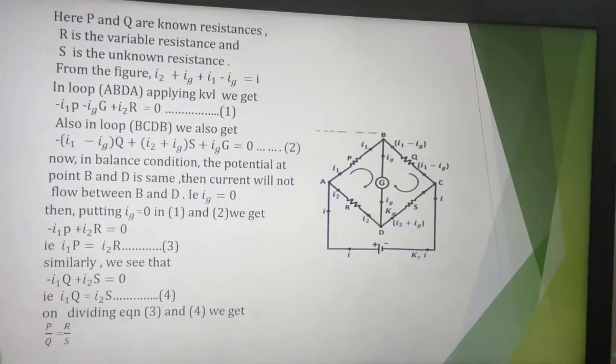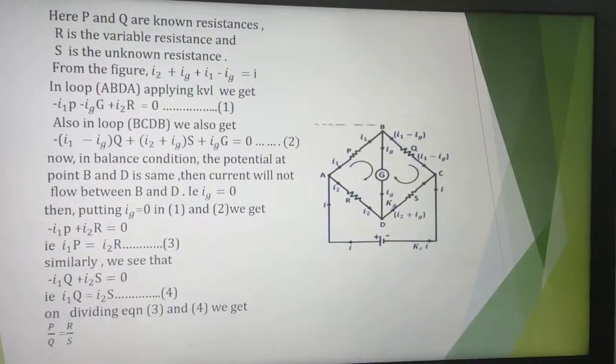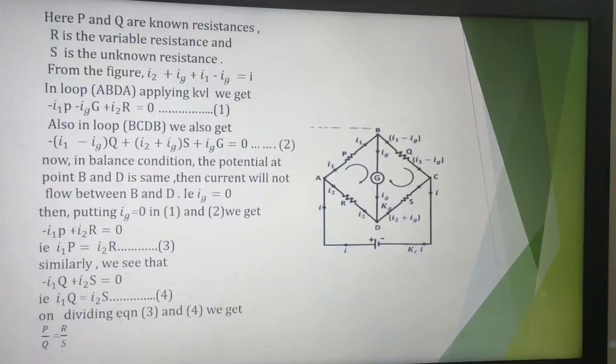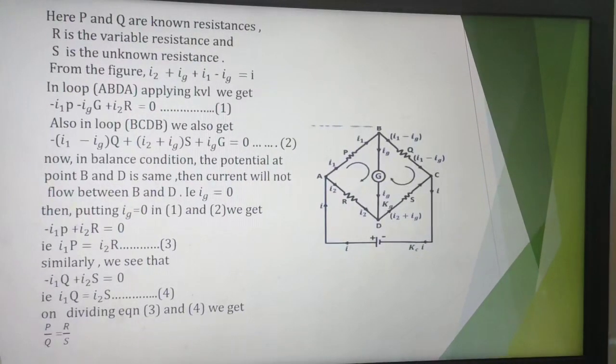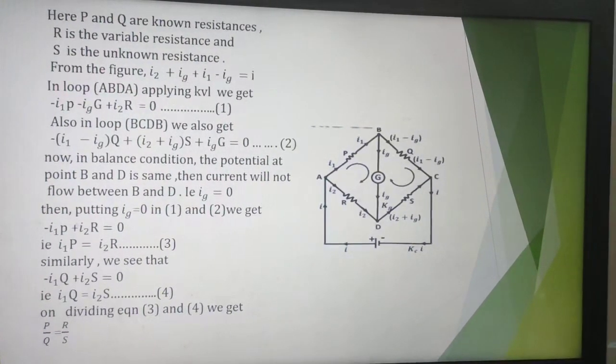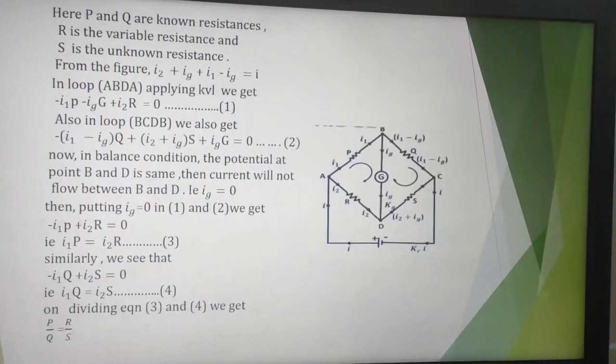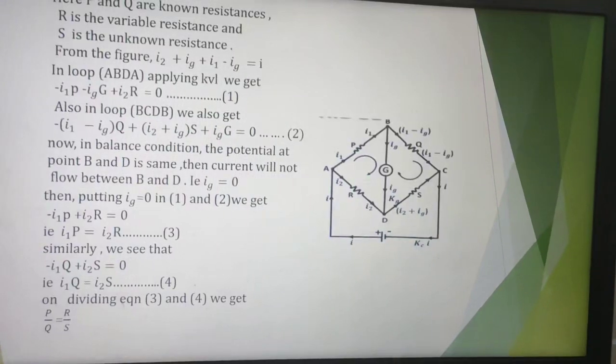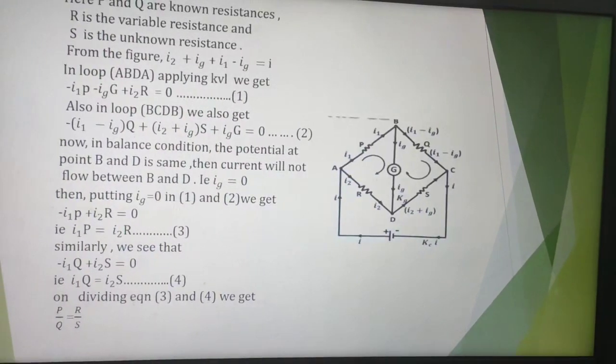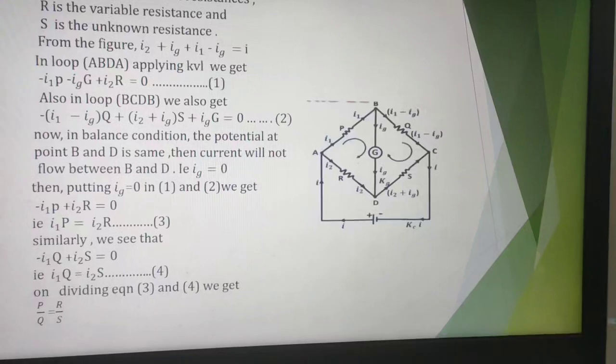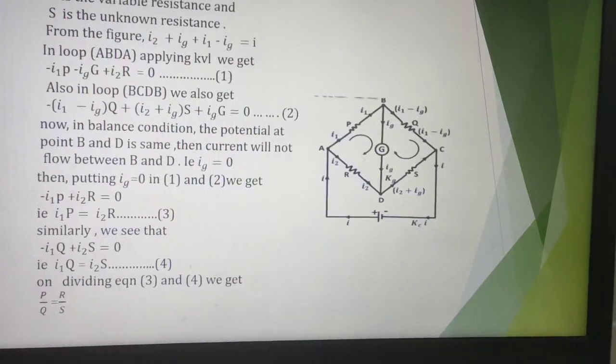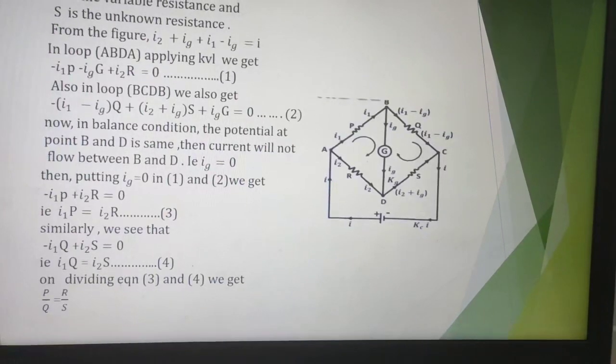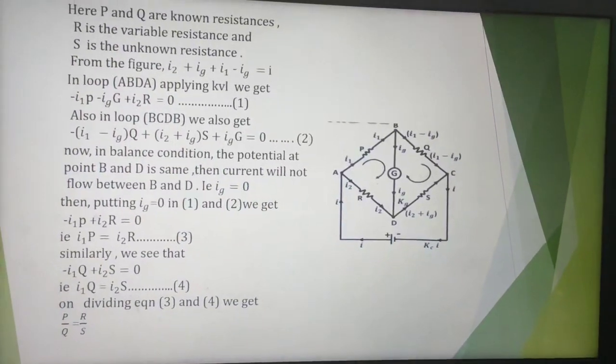Now as we have discussed in the construction, in this figure we see that there are four resistors connected in a parallelogram shape. P and Q are known resistances, R is the variable resistance, S is the unknown resistance to be calculated. Now let us denote the points as A, B, C and D. Between point A and C, the EMF battery and current switch is connected. Between point B and D, galvanometer G and the galvanometer switch is connected.